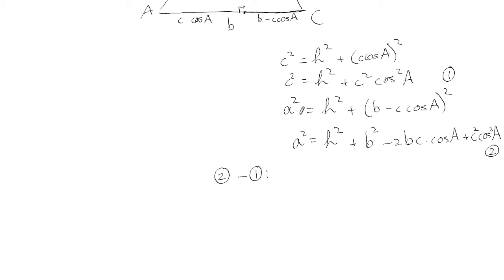So on the left we'll get that minus that. And then that will cancel with that. And we'll have the b squared minus 2bc cos A. And then we'll have that minus that one. So those will actually cancel each other out. So that's it.